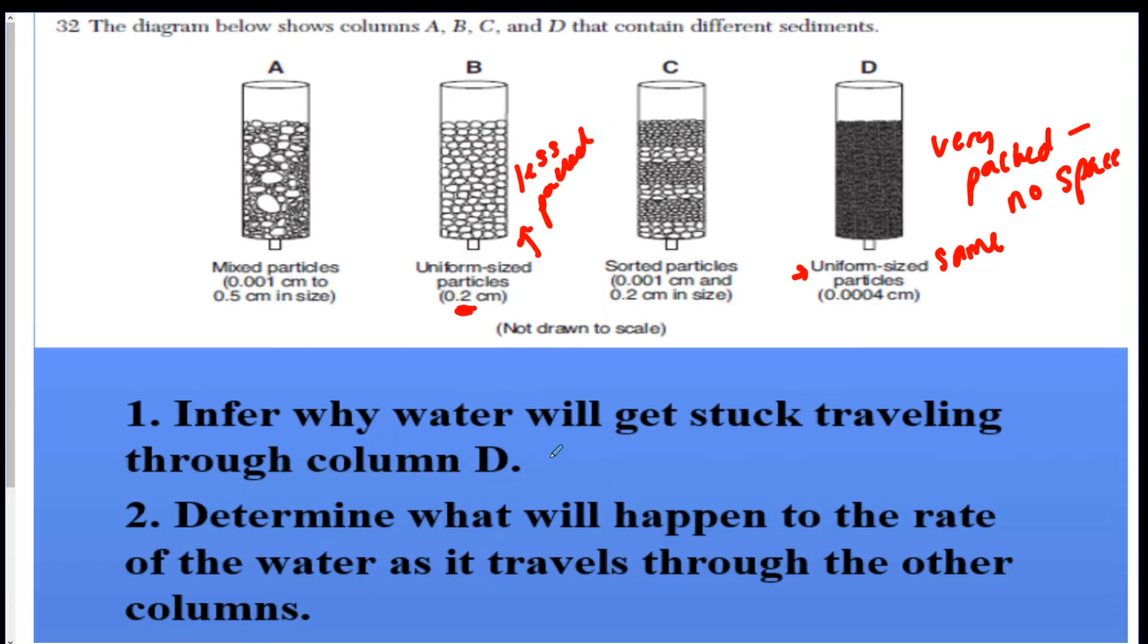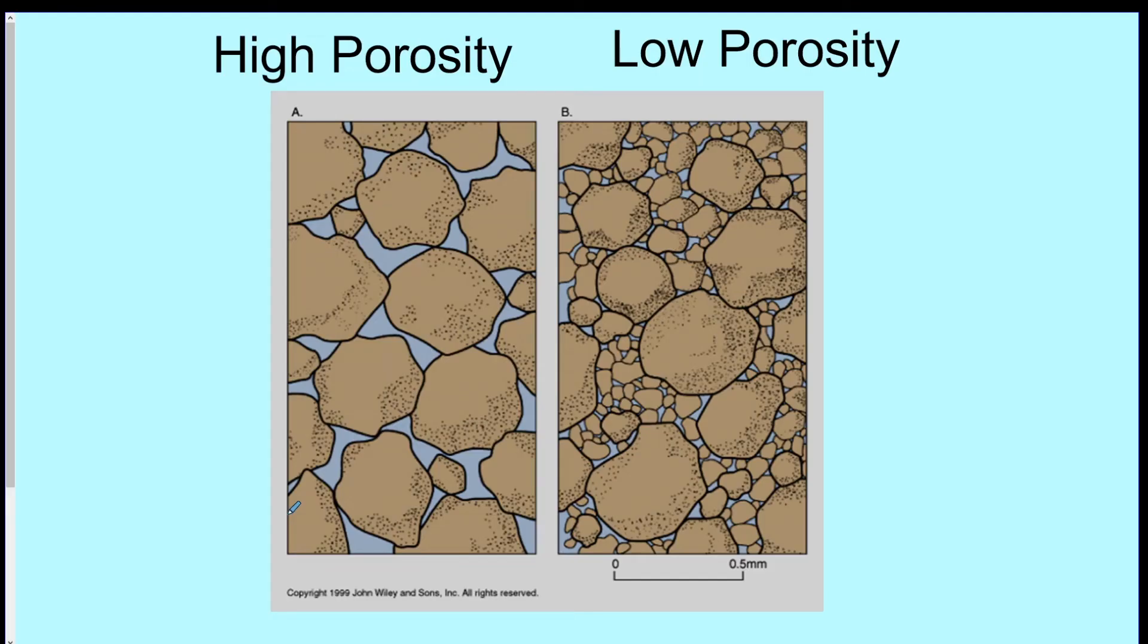So column D, the particles are small, so they're more packed. So the water is going to have a problem getting through there. It's not going to have any space to flow through. Maybe eventually it will, but it's going to take a very long time. So we're going to skip number two for now. You don't have to worry about that one. So here's a picture of high porosity and low porosity. You can see high porosity has a lot more spaces, and low porosity is not a lot of spaces.